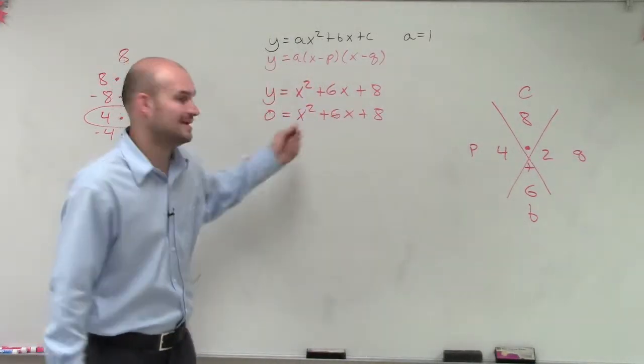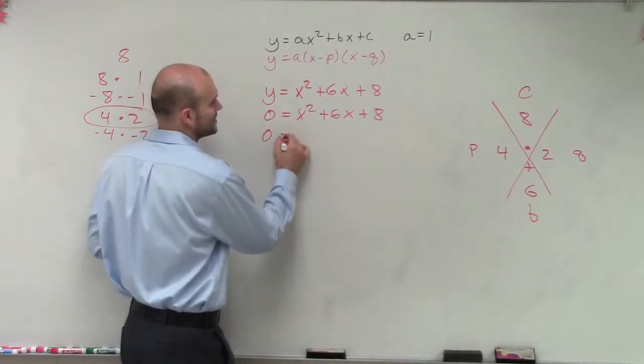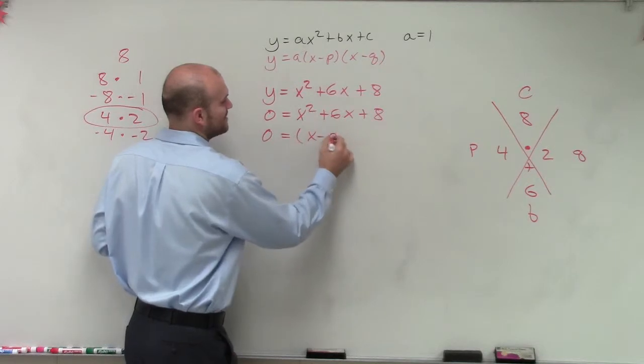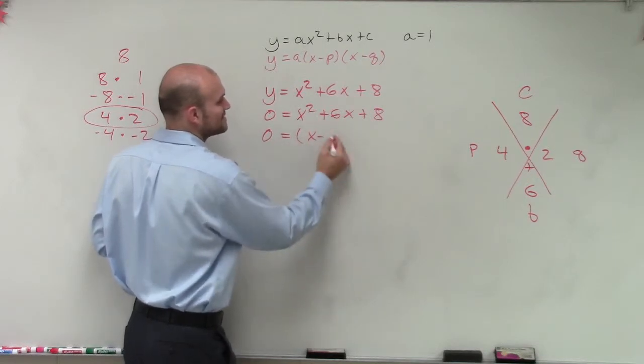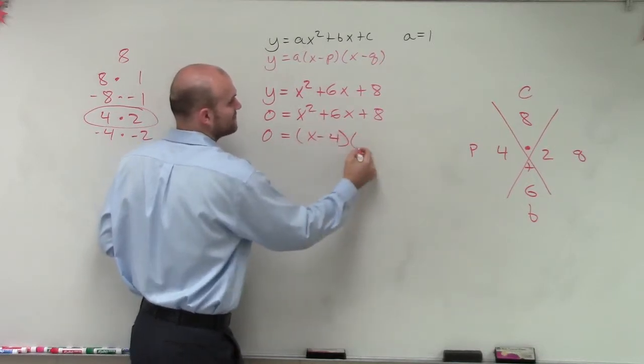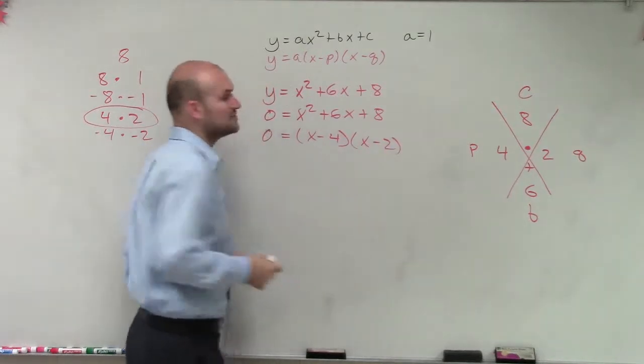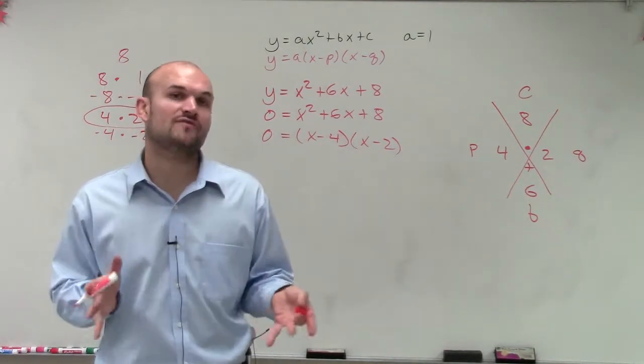Now that's going to be my p and my q. So I write this as 0 equals x minus p. Or x minus—not p. We know what p is, p is 4. x minus 4 times x minus 2. So now we know what my p and my q are, the two values for p and q.